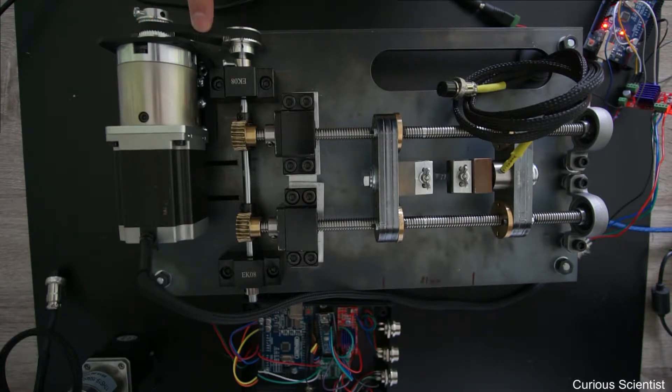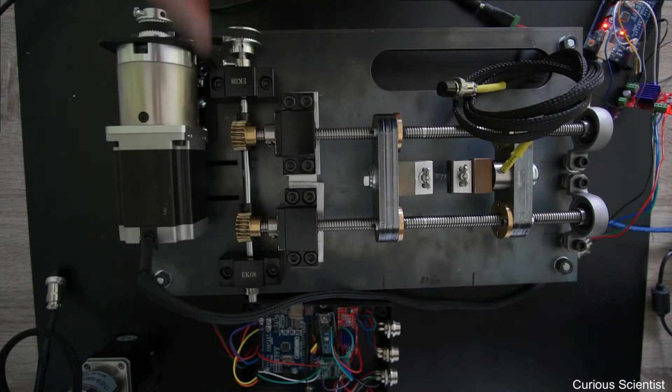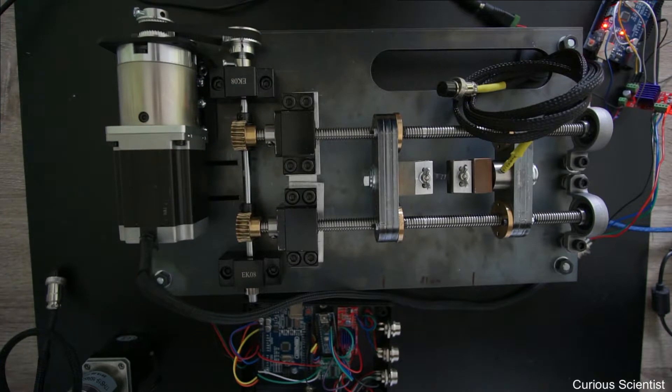Once we leave the shaft of the motor there's a small belt here, basically a 1 to 1 gear ratio. Then we have an 8mm shaft which has two worm gears and they're connected to two worm wheels. The gear ratio of this transmission is 1 to 20.